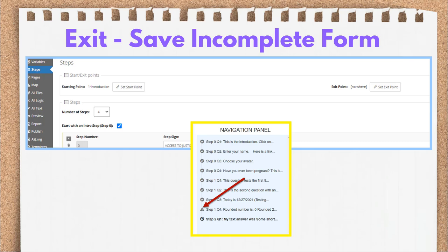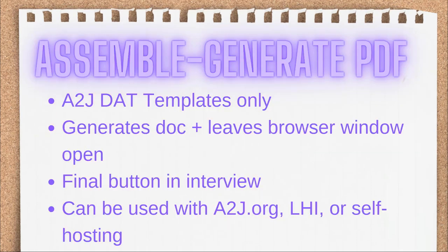This is a relatively new feature since December of 2021. The advanced end user navigation panel, highlighted here in yellow on the screen, shows the end user where they've been and where they have to go.